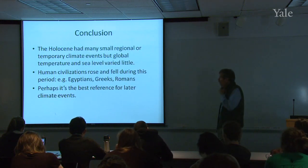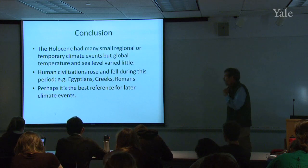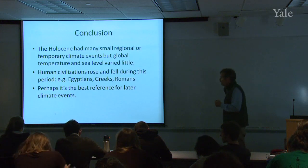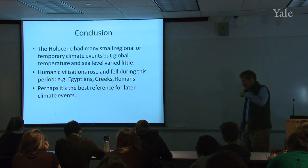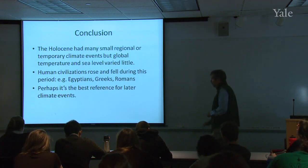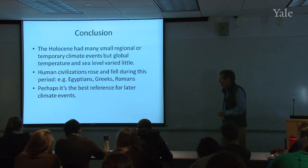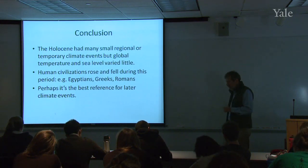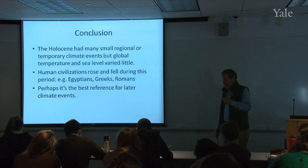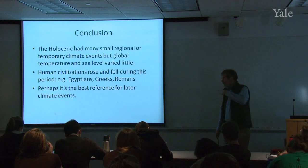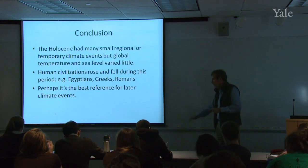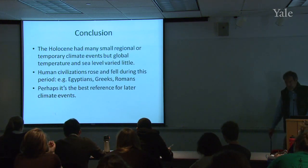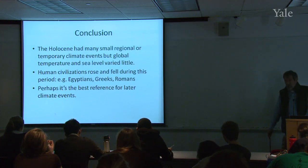The Holocene had many small regional or temporary climate events, but generally global temperature and sea level varied quite little during those 10,000 years. In that sense it's probably a pretty good reference. Yet a lot was going on in terms of human history — civilizations were rising and falling — so we saw enormous human change during this relatively constant period of climate. Perhaps it is the best reference for later climate change, but that's quite open to argument.